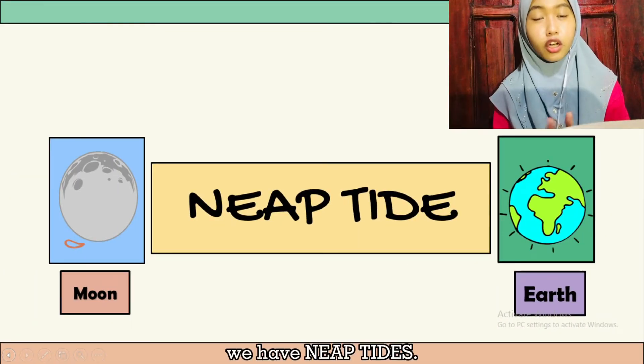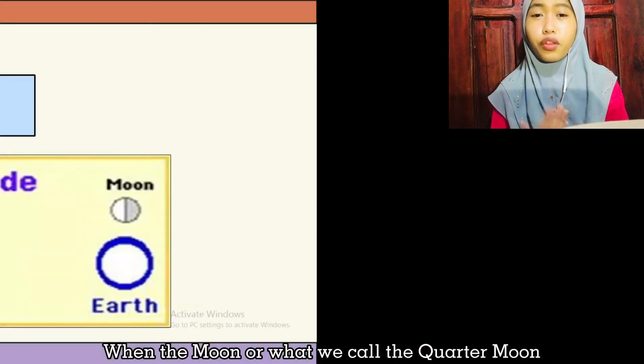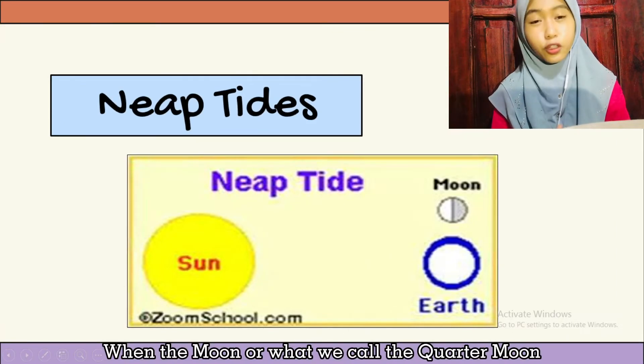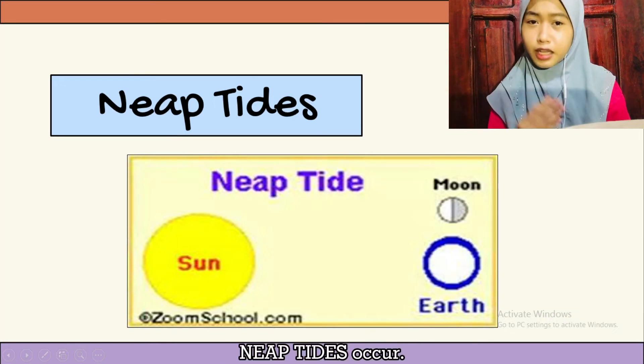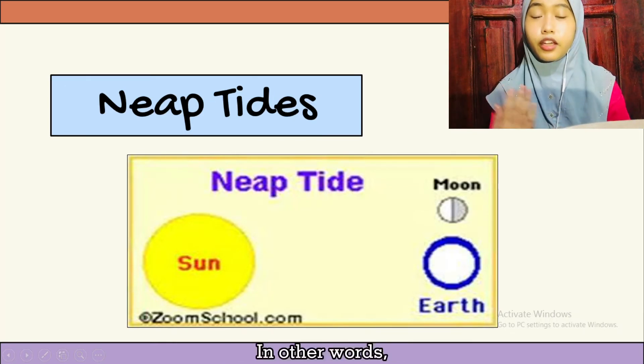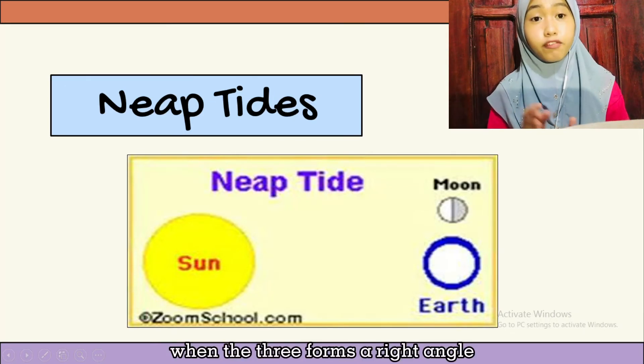Moving forward, we have neap tides. When the Moon, or what we call the quarter moon, and the Sun are 90 degrees away with respect to the Earth, neap tides occur. In other words, when the three form a right angle, we can conclude that the tide is classified as a neap tide.